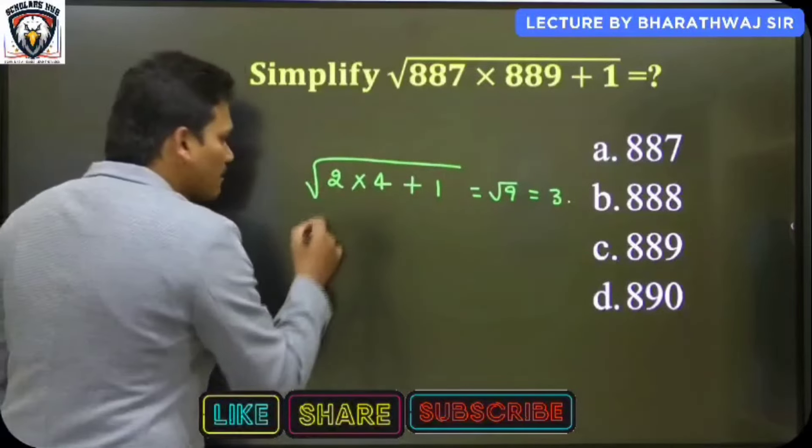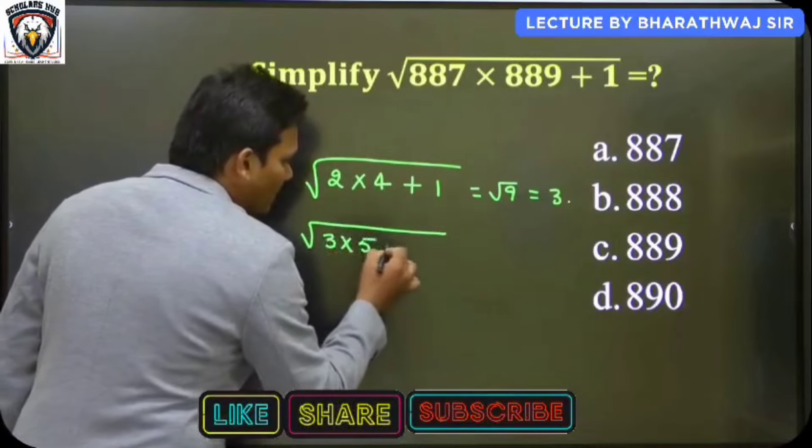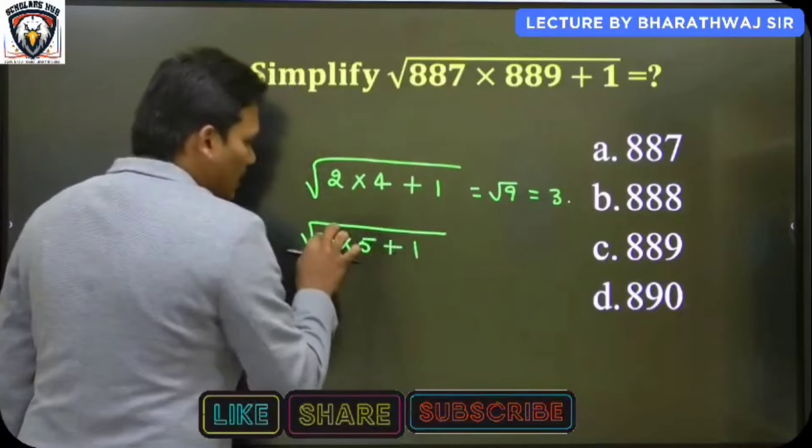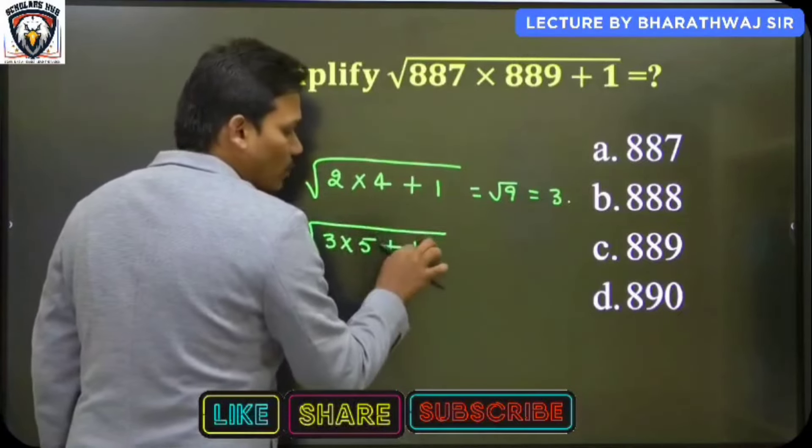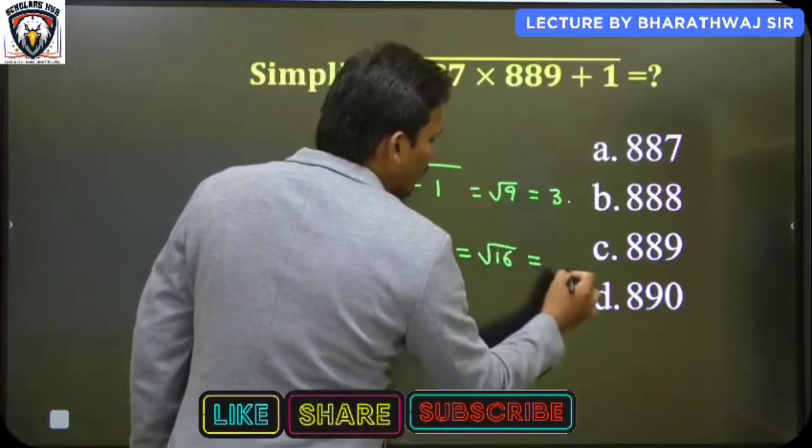So let us consider another example. First number I'm considering as 3 and second number as 5, and just add plus 1. So 3 times 5 is 15, plus 1 is how much? Root 16. So root 16 value equal to how much? 4.